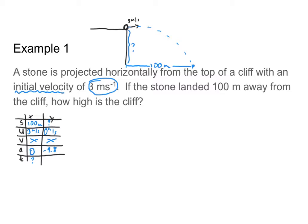The reason I need to start by finding time is that the object hits the ground at one point in time. So the time in the x direction equals the time in the y direction — they are just the same t. If I find time in the x direction, I can write that into my y column and then I'll have enough information to figure out my displacement. This is usually the first step for these problems: finding your time by using either your x or y direction information.